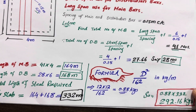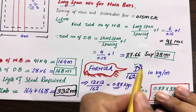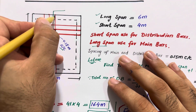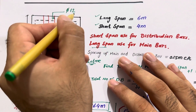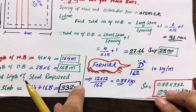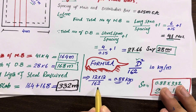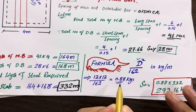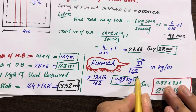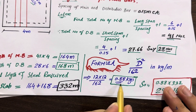Now we use the formula to find the weight of steel. The formula is d² divided by 162, where d must be in millimeters. We are using 12 millimeter diameter steel rods for both main bars and distribution bars. So 12 multiplied by 12, divided by 162 — the unit weight for 12 mm diameter steel rod is 0.88 kg per meter.